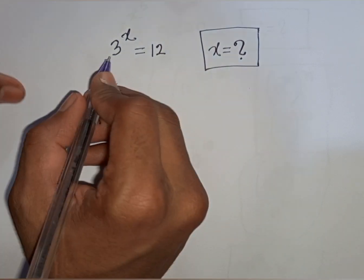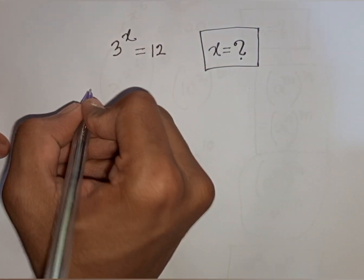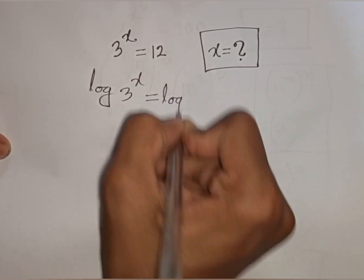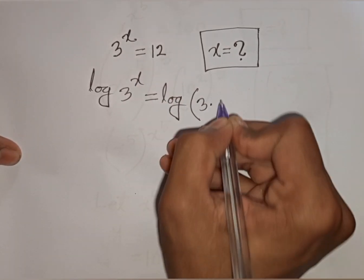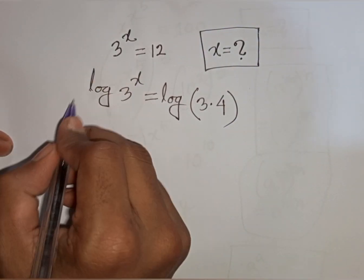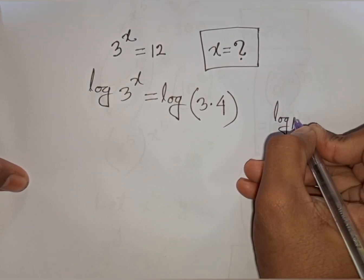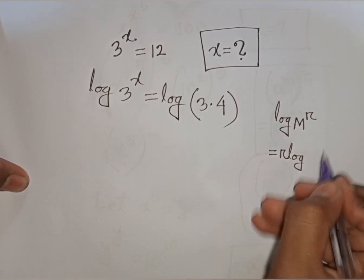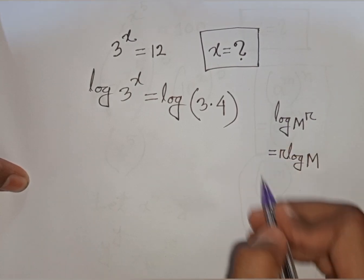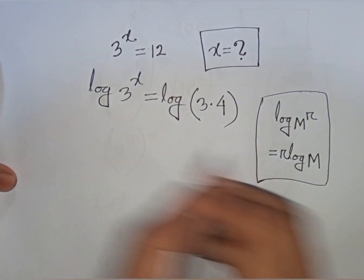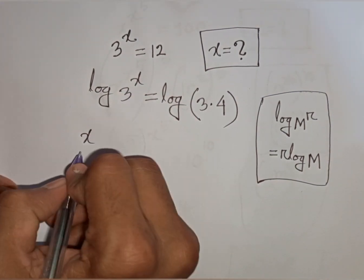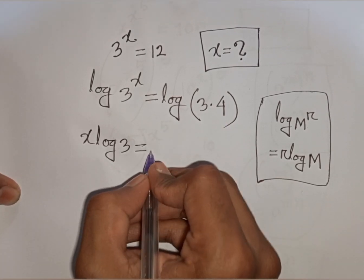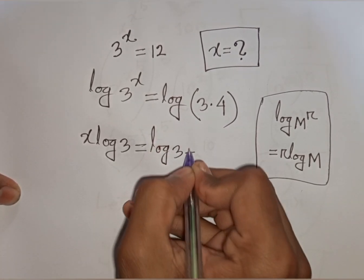Now solve 3^x = 12. Find the value of x. At first we take log on both sides: log(3^x) = log(12), and 12 can be written as 3 × 4, so log(3 × 4) = log 3 + log 4. Applying the rule log(m^r) = r·log(m), the power x moves to the front: x·log 3 = log 3 + log 4.